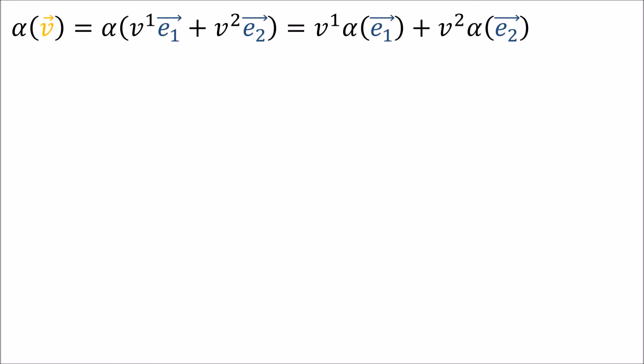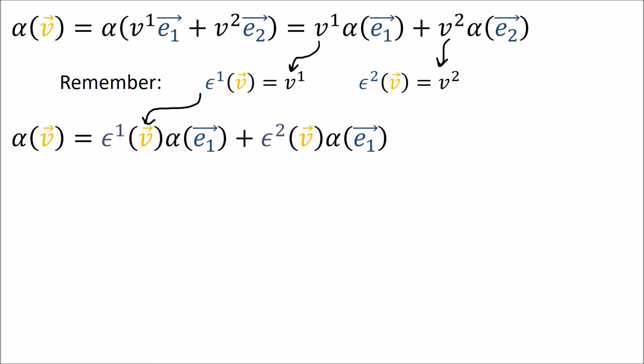Now let's apply some general covector alpha to v. This could be any covector we choose. Again let's expand v in the basis e₁, e₂ and use the linearity of alpha to get this. Now remember the components of v can be obtained by applying the epsilons—the epsilons project out the components. So we can rewrite alpha of v like this.